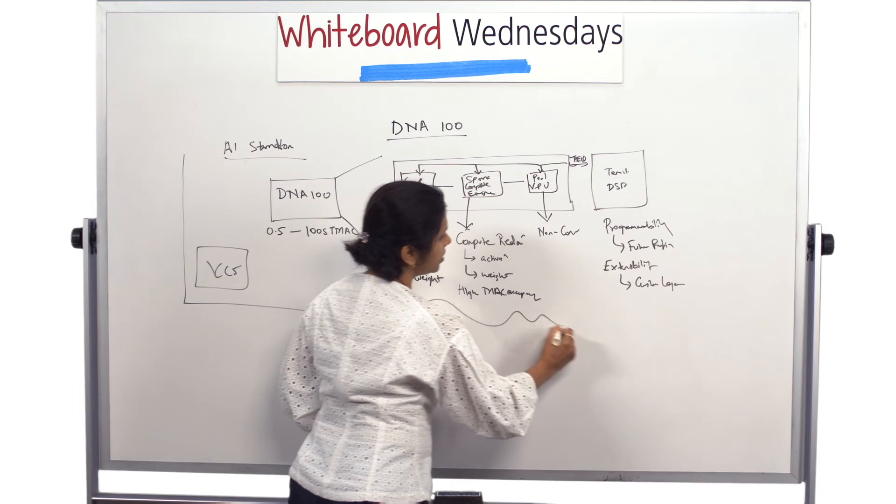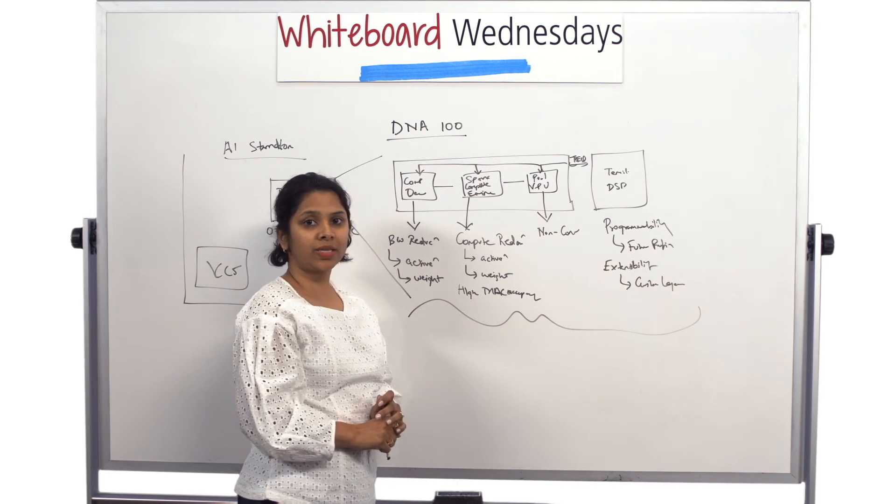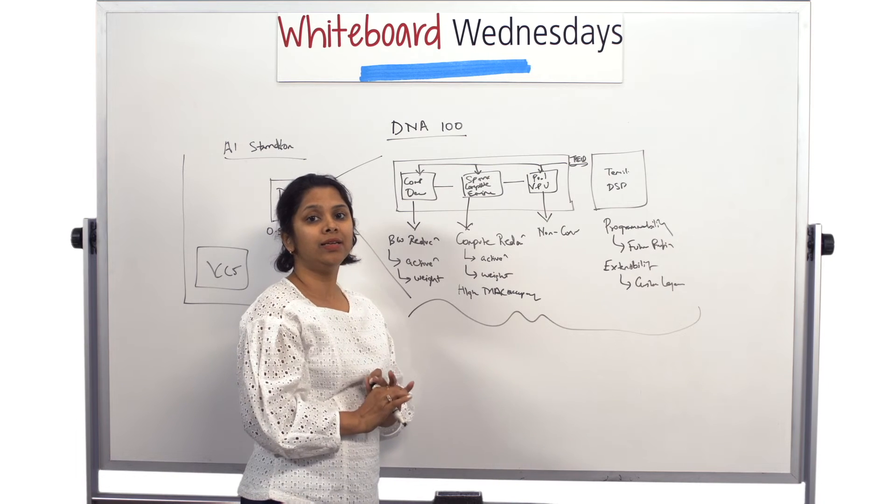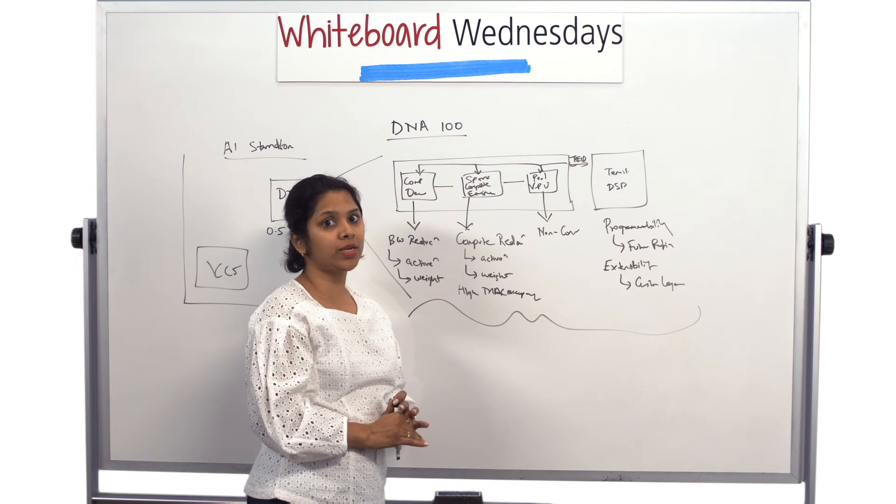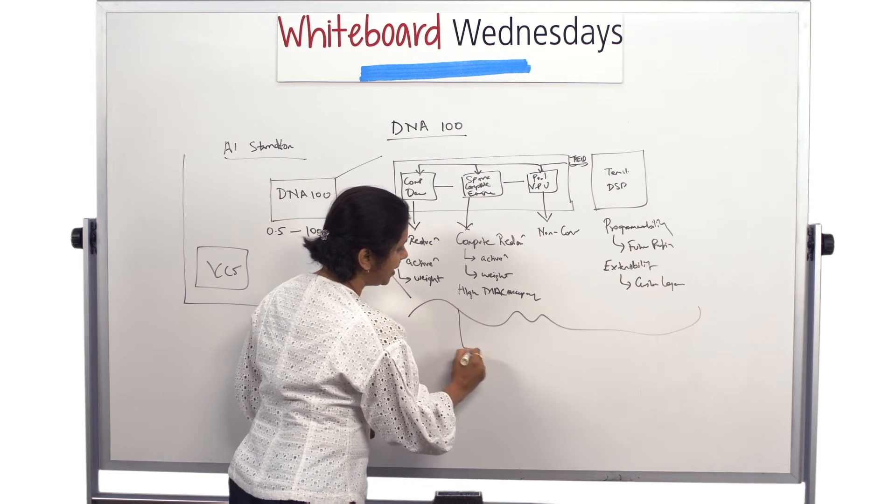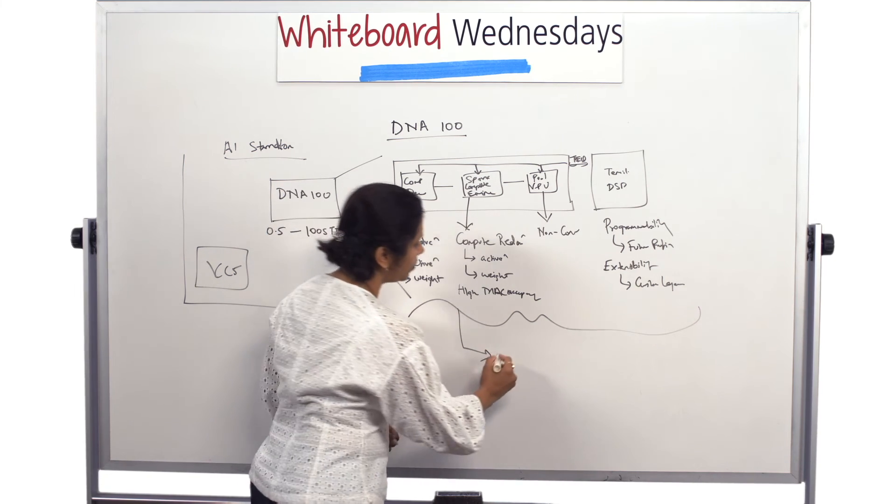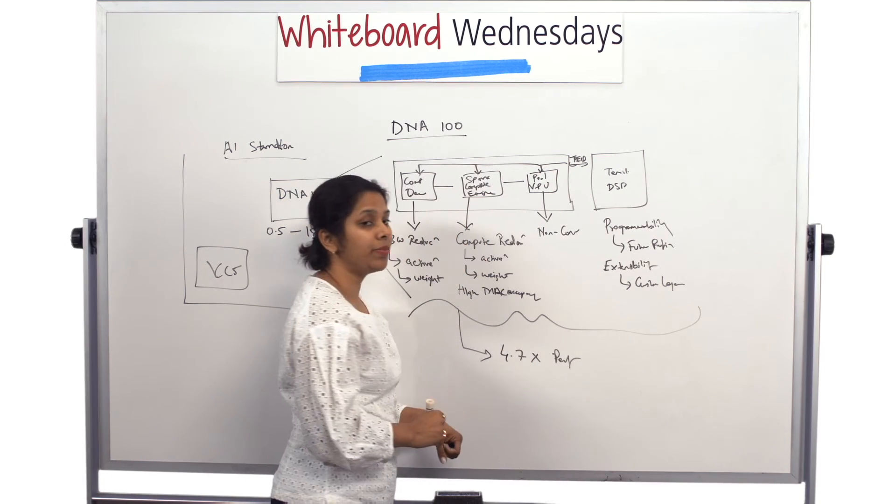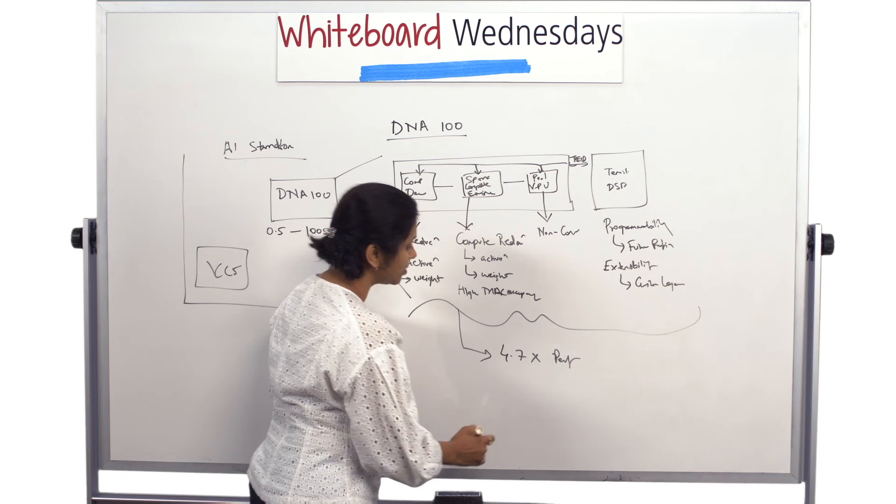So overall with all this structure inside DNA100, we are able to cater to the key needs and the requirements and the trends which we are seeing in the field of AI. With all this, DNA100 is able to give you 4.7x more performance compared to what we are seeing in the market for a similar array size.